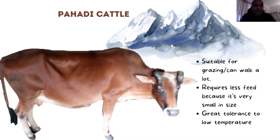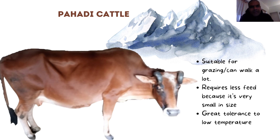The most suitable for hill conditions is what we call the Pahadi cow. It is suitable for grazing - in villages they leave these cows out in the forests and they can walk quite a bit and graze on their own. They eat very little and are significantly smaller than imported breeds. However, the production of milk from the Pahadi cow is extremely low.